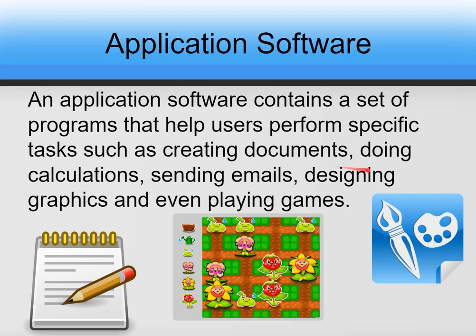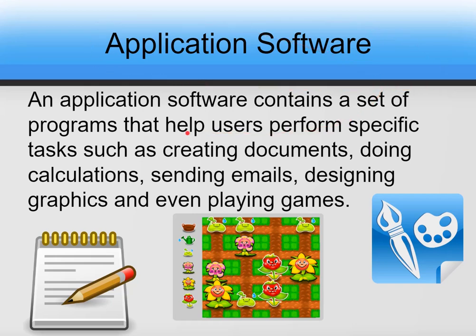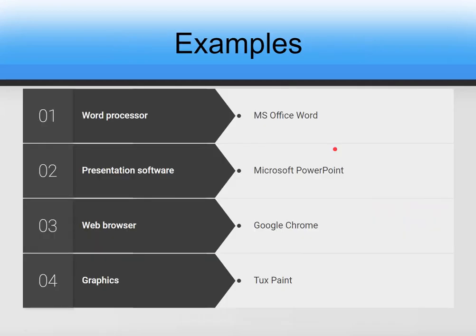More examples: if you wish to create a document you will use MS Word; if you want to do calculations you will use the calculator on your computer; if you wish to send emails you will use the internet; if you wish to design graphics or play games — all these softwares that help you interact with the computer and do things on it are called application software.